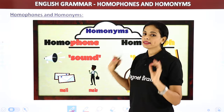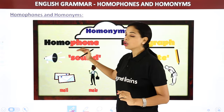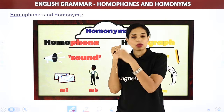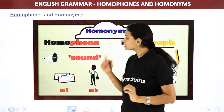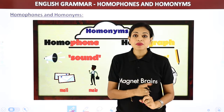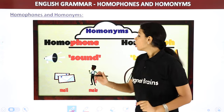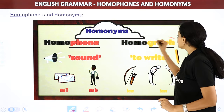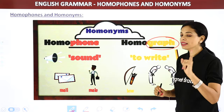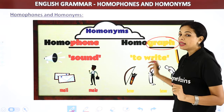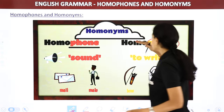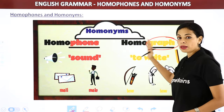Homonyms are divided into two categories. First is homophone — 'homo' means same, 'phone' means sound. So homophones have the same sound but different spellings and meanings. Second is homograph — 'graph' means to write, so homographs have the same spelling, but their pronunciation may or may not be the same, and their meanings are always different.